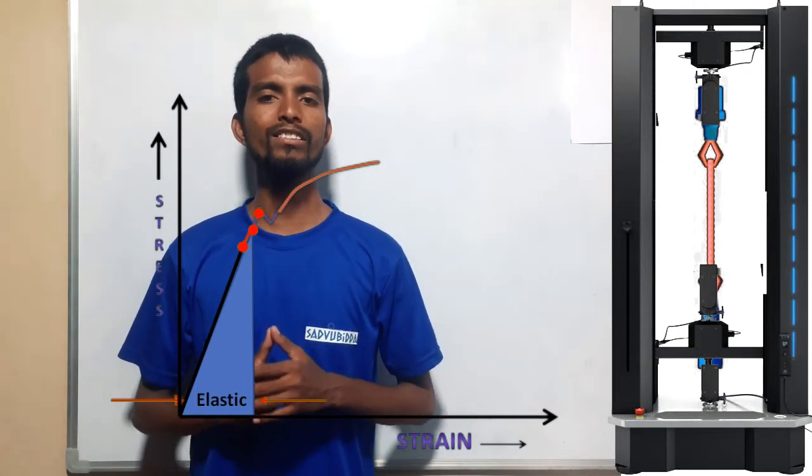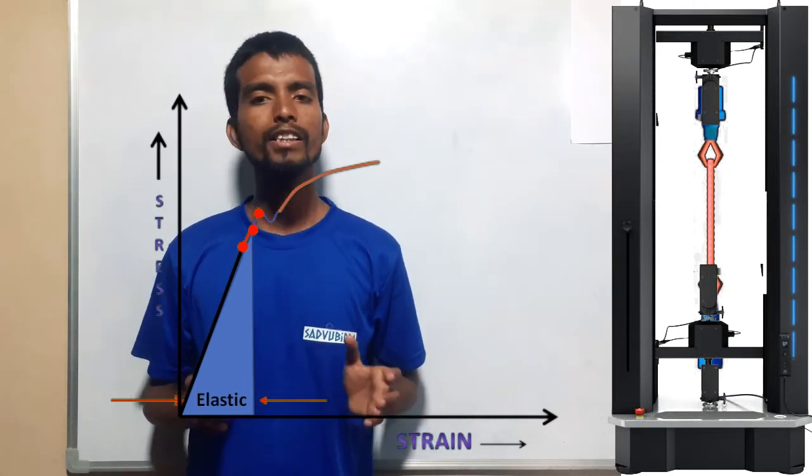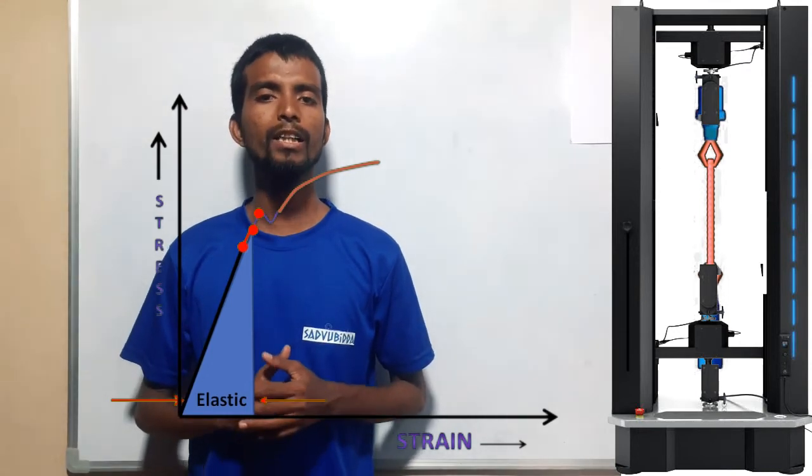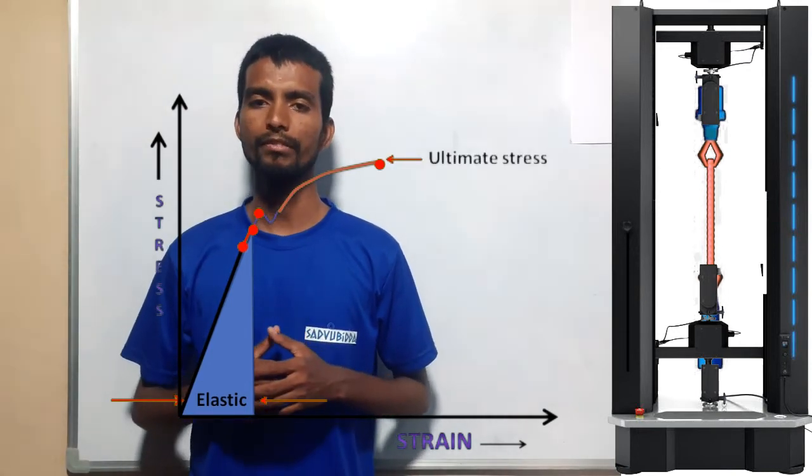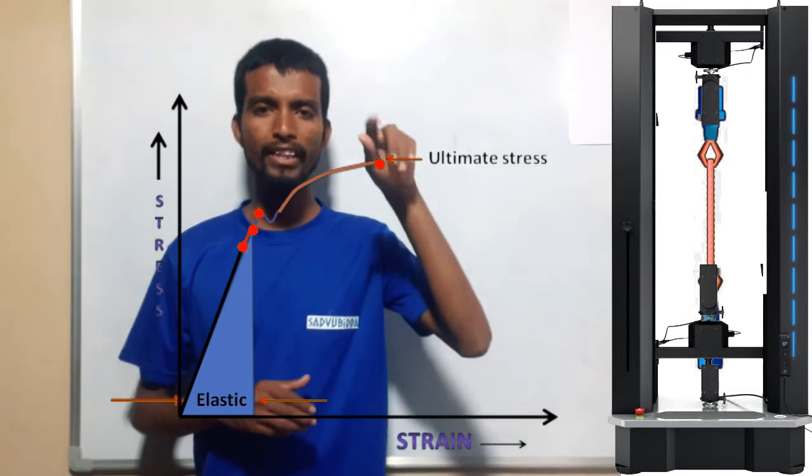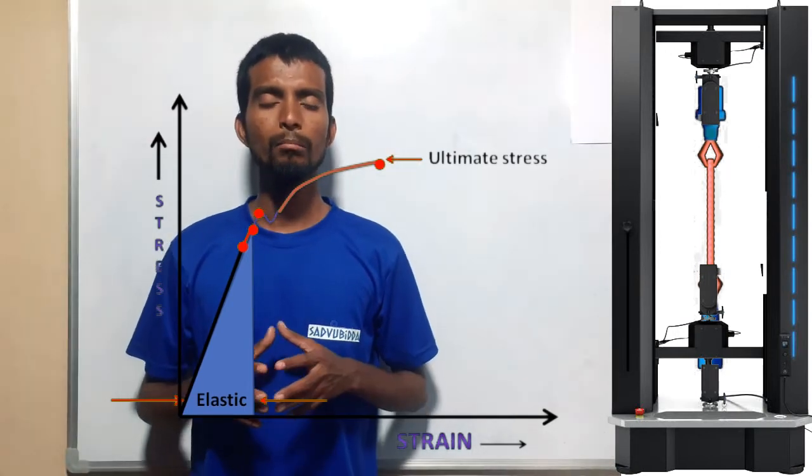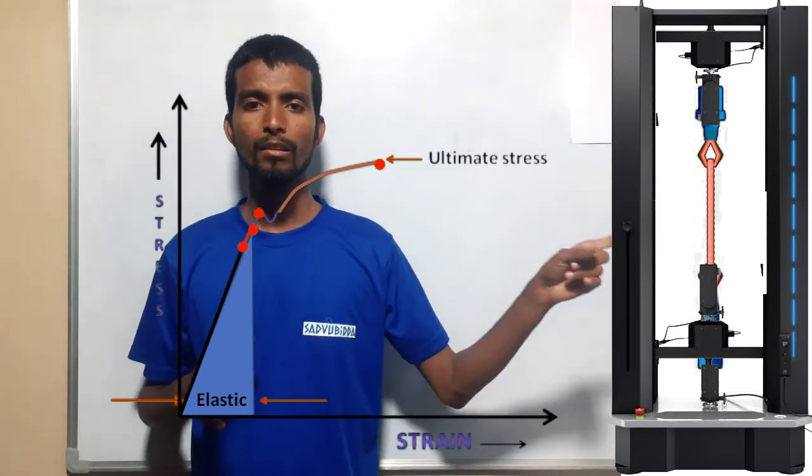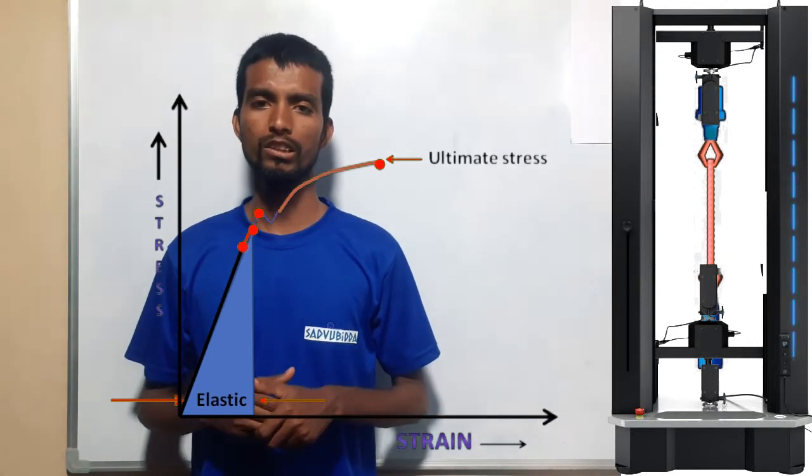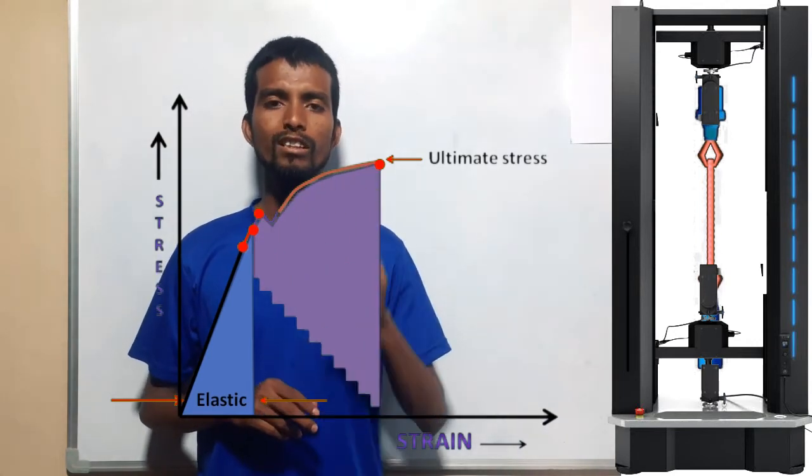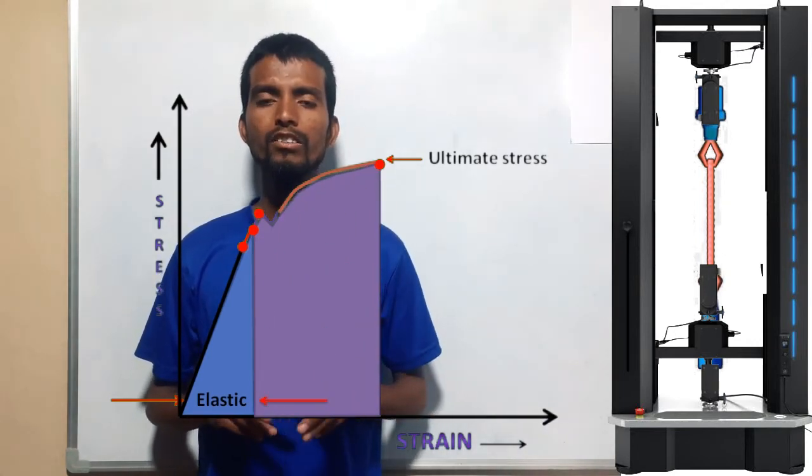This highest point is known as the ultimate stress point. The value at the ultimate stress point is the maximum stress a mild steel can withstand. Up to this ultimate stress point, this region is known as the plastic zone or uniform plastic elongation zone.